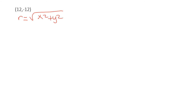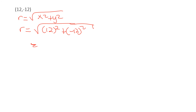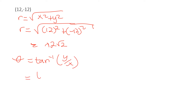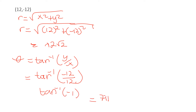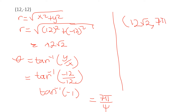For the next example, r equals √(x² + y²), so r equals √(12² + (−12)²), which gives us 12√2. And theta equals arctan(y/x), which is arctan(−12/12) = arctan(−1), which equals 7π/4. So the polar coordinate is (12√2, 7π/4).